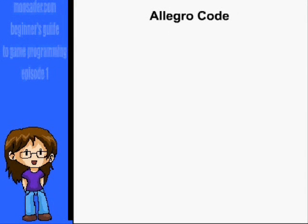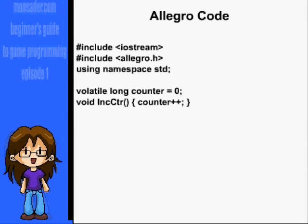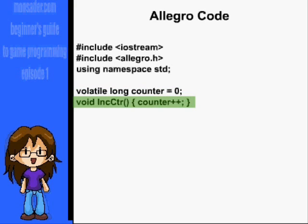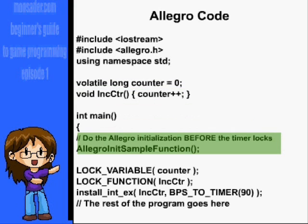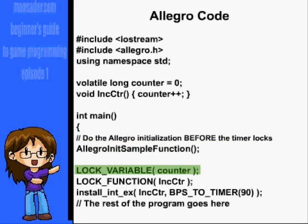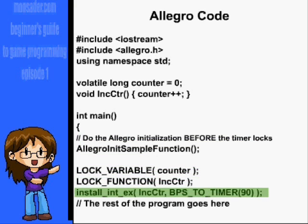The Allegro code is pretty simple. This code is basically a modified version of the Loomsoft Tutorials timer function. First, create a volatile long named counter, and afterwards create a small function that increments the number. In main, after you initialize everything for Allegro, immediately use the lock_variable function, the lock_function function, and the install_int_ex function. These will keep these updating at an even rate, which is based on the system clock.